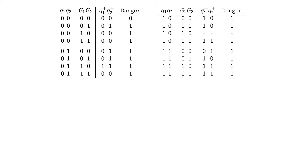Now that we have our truth table, we can write our three Boolean functions: Q1 plus, Q2 plus, and danger. For each function, we look at where we find a one in the truth table and write the expression that realizes that one. Starting with Q1 plus, the first term can be written as Q1 prime · Q2 · G1 · G2 prime.